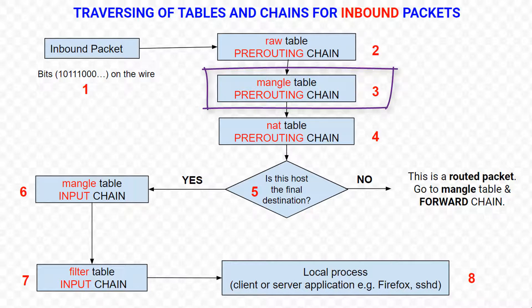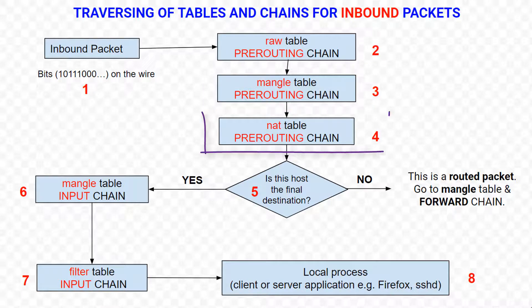Then the packet traverses the mangle table of the pre-routing chain. At this point we can change values from packet headers, like type of service, flags, or time to live. The NAT table of the pre-routing chain is used for destination network address translation or port forwarding. Any traffic filtering should be avoided here.